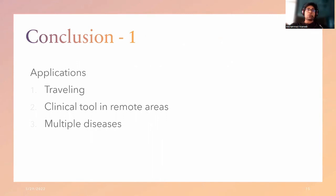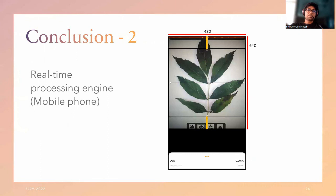There are several applications where this code and tutorial can be used. For example, when traveling, you can use a medical image classification application, and it can also be used as a clinical tool in remote areas. Using the code, applications for multiple diseases can also be developed. It is important to note that when processing images on mobile phone, there is a difference in how images are processed. For example, on a mobile screen of 480 width and 640 height, only the image within the black rectangle is used for further processing by the deployed model. When testing the model in real-time, ensure the image falls within this area for accurate prediction.